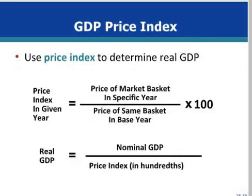This is the formula used to calculate real GDP. We use a price index that is equal to the price of a collection of goods and services in the specific year, divided by the price for the same goods and services in a base year, multiplied by 100. Nominal GDP is then divided by the price index, in hundredths, to determine real GDP.